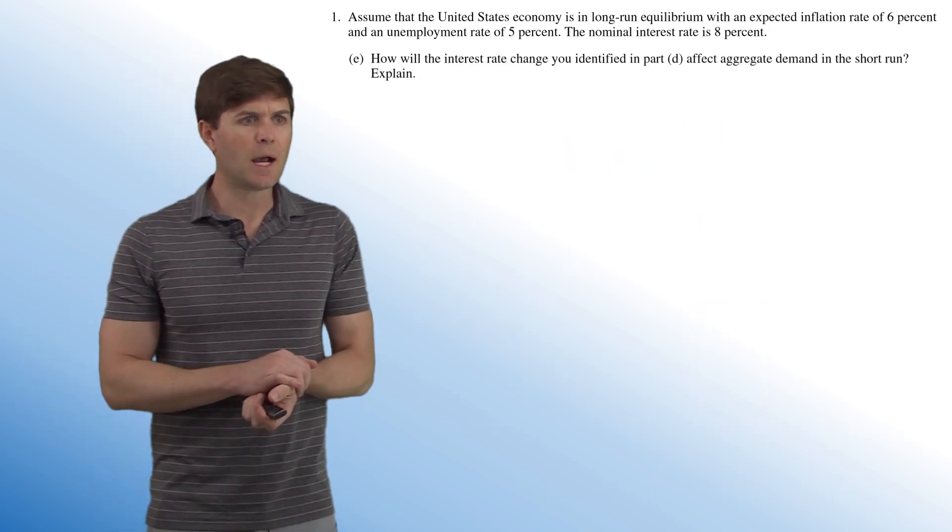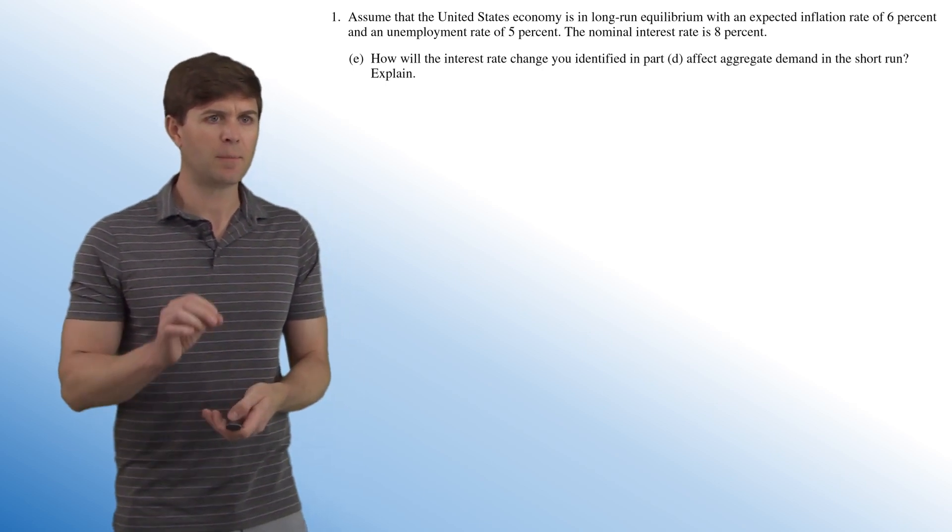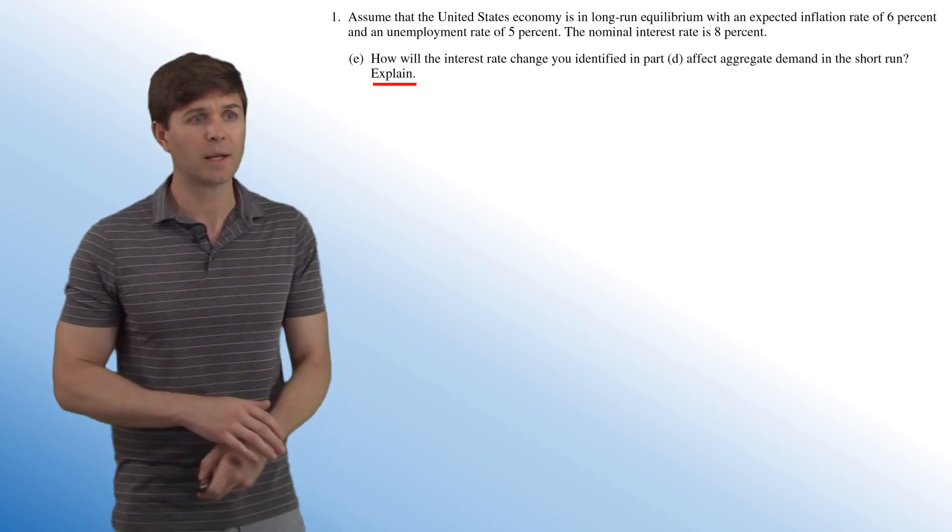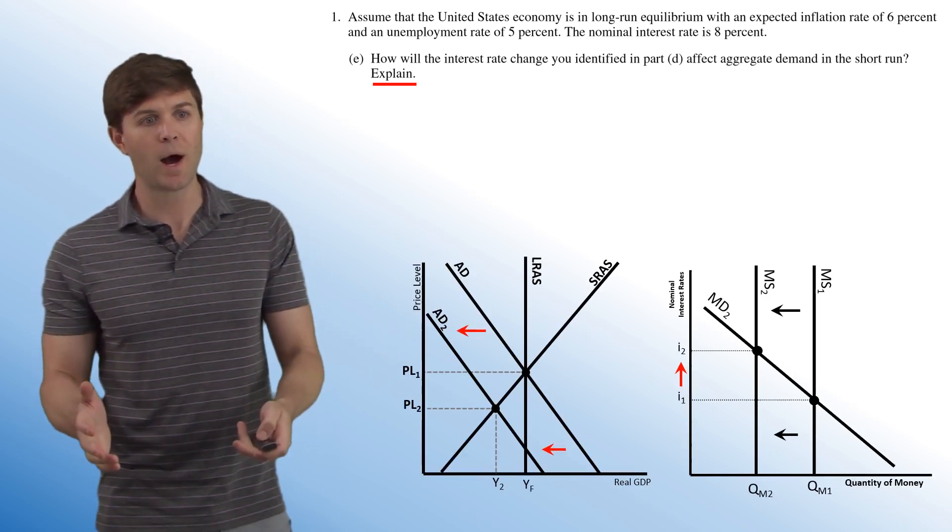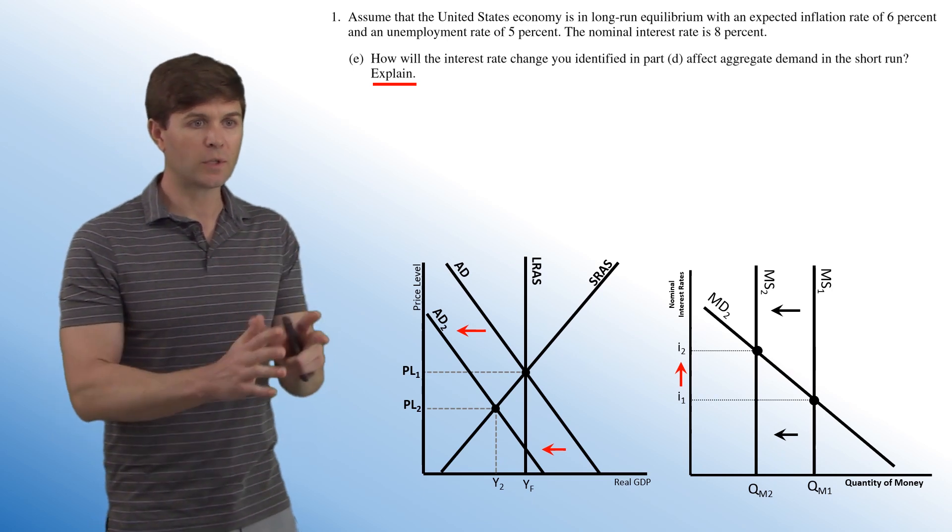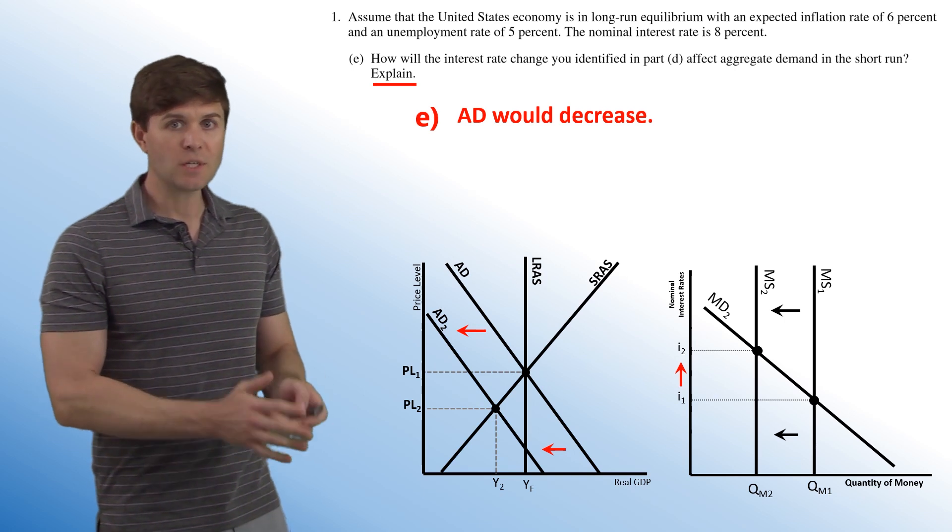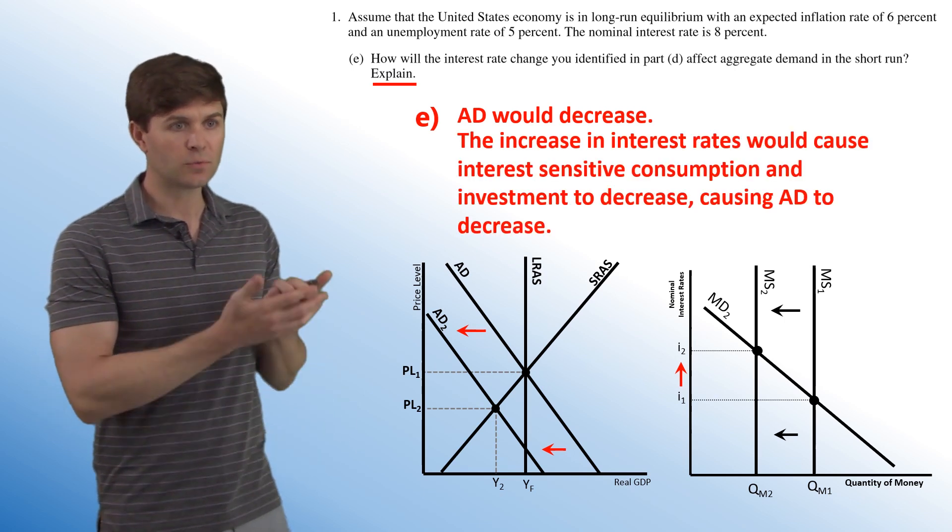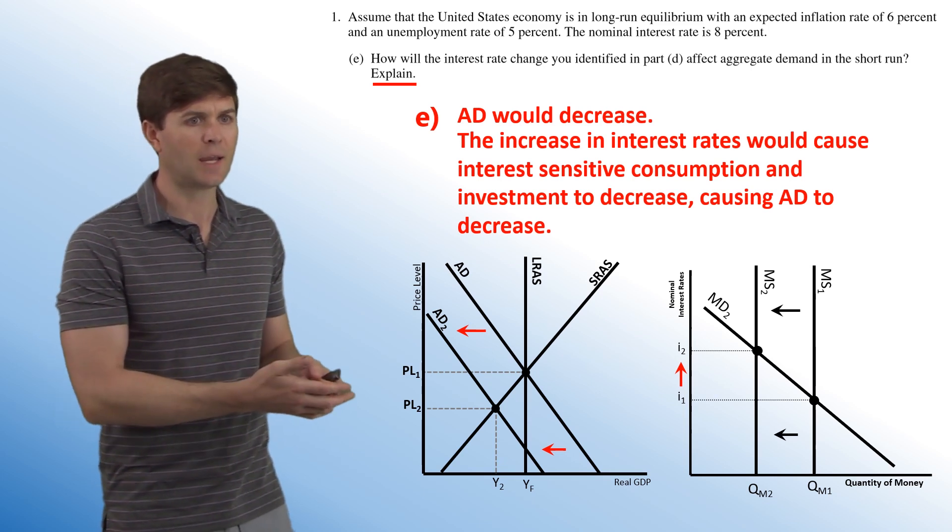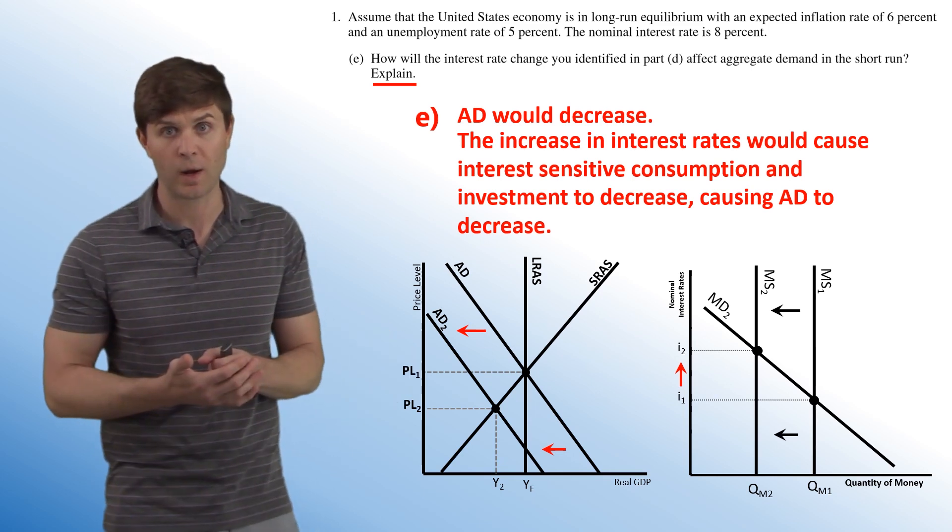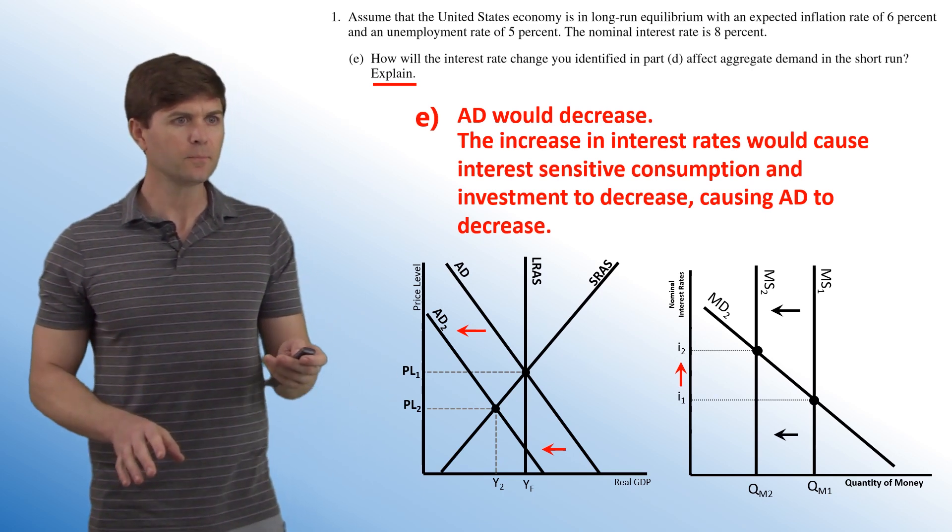Question E. How will the interest rate change you identified in Part D affect aggregate demand in the short run? Explain. We kind of talked about this already, but that left shifting aggregate demand curve, we have to explain why. So we can use that idea of the interest rate increasing. Aggregate demand would decrease because as the interest rate increases, it would cause interest-sensitive consumption and investment to decrease, causing aggregate demand to decrease as well. I already stated that, but there's a perfect answer for this question.